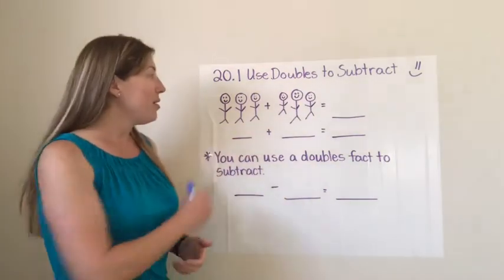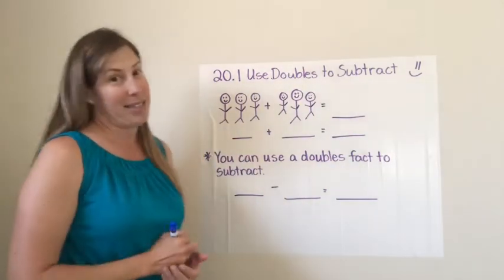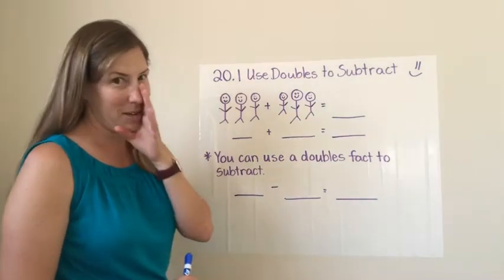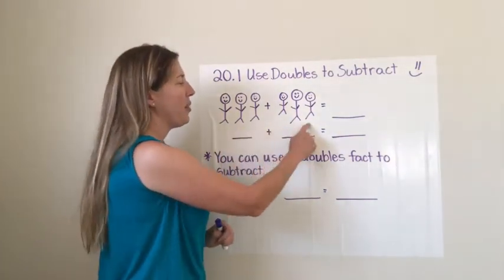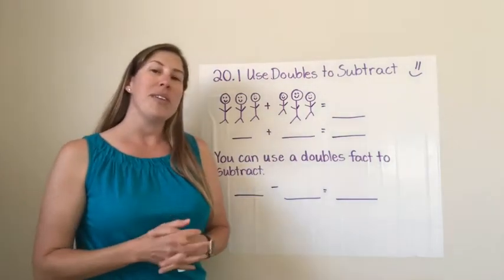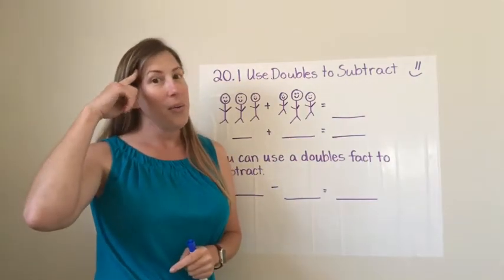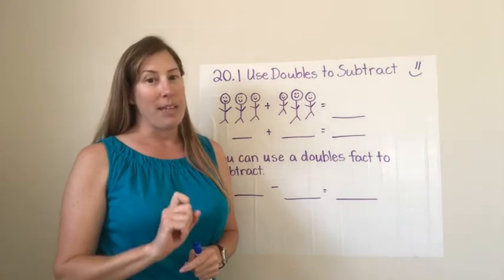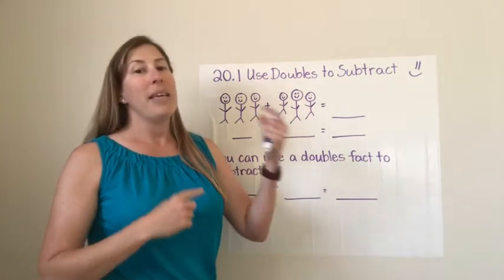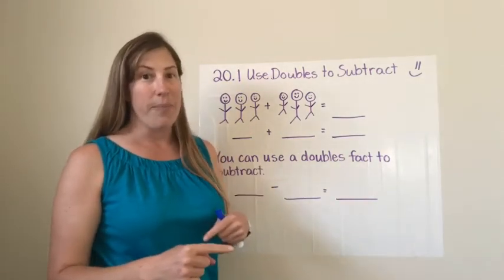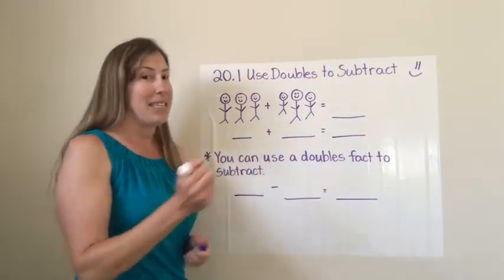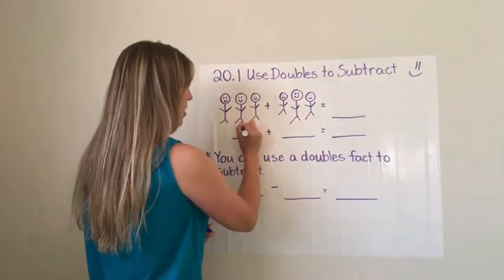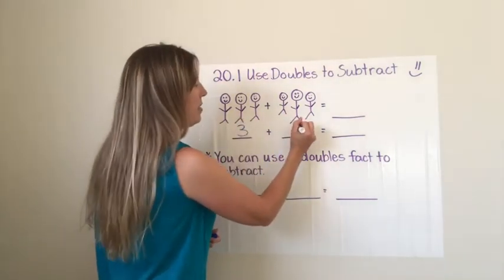So here you can see I used my great artistic talent which I don't have very much and I drew three kids here and three kids here. And what we're going to do today is we're going to use what we already know about doubles math facts in addition to make subtraction easier. So let's look at this picture. I have three kids here and I have three kids here.